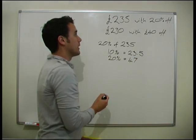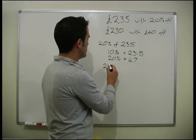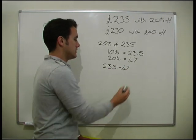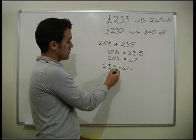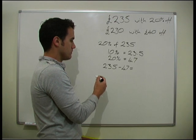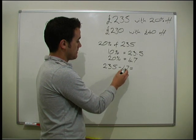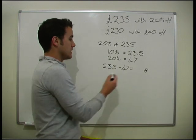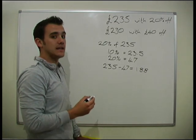To find out how much it would actually cost us, we need to do 235 minus 47. Working that out gives us £188.